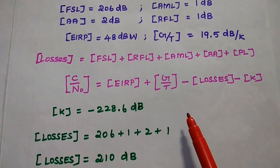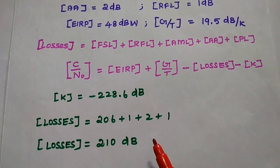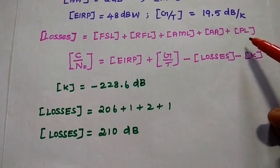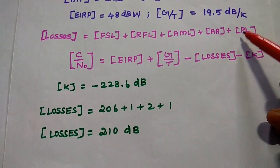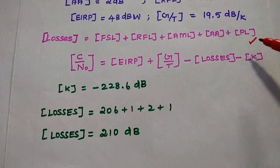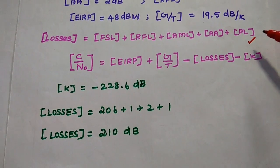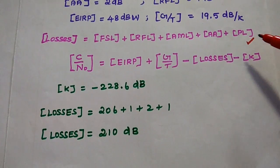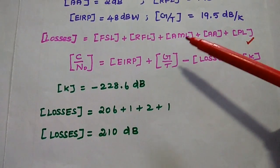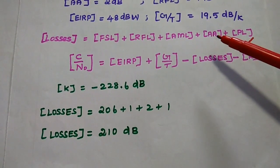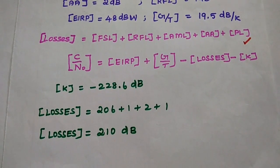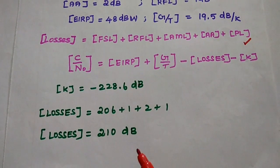The overall losses are obtained by adding all the losses together. In the formula, PL is polarization loss, which may be neglected in this problem. So FSL is 206, RFL is 1, AML is 1, and AA is 2 — giving overall losses of 210 dB.